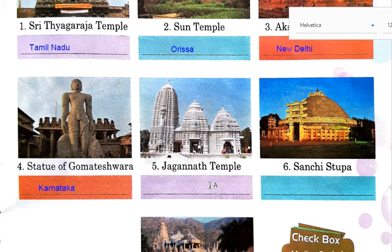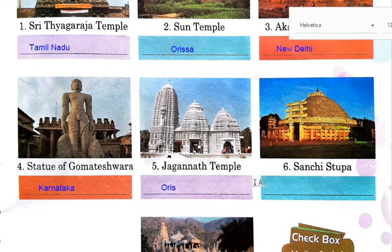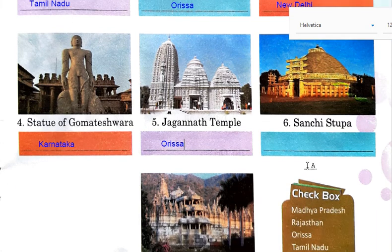The next one is Jagannath Temple. Jagannath Temple is in Puri, and Puri is in Odisha, so you can write Odisha. The next one is Sanchi Stupa. Sanchi Stupa is in Madhya Pradesh.